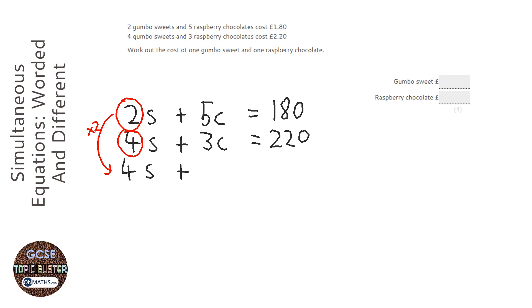So I'm going to multiply 5C by two and multiply 180 by two, which gives 360.